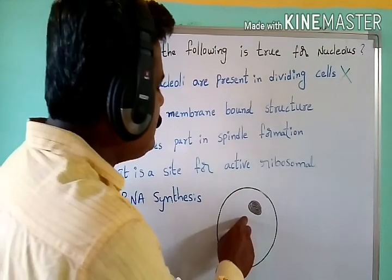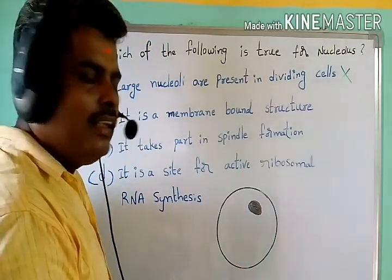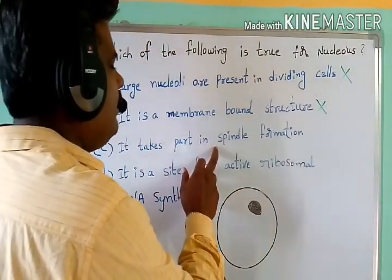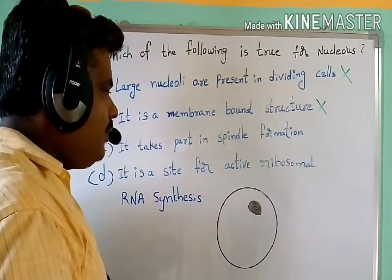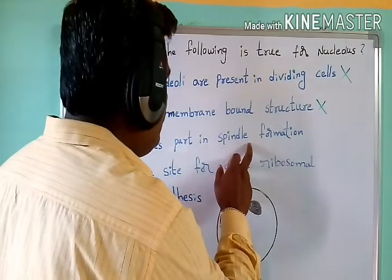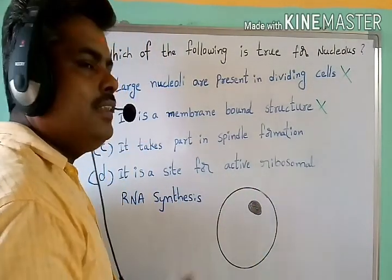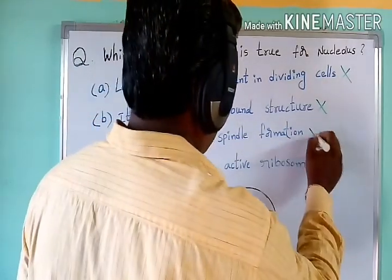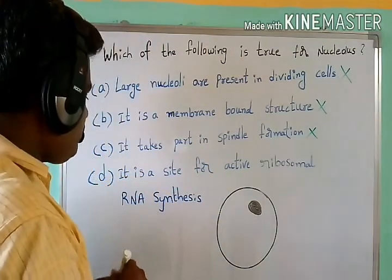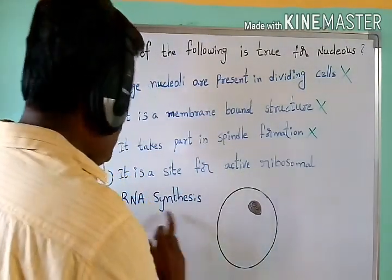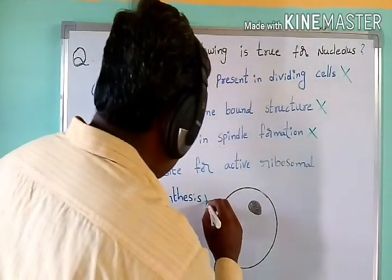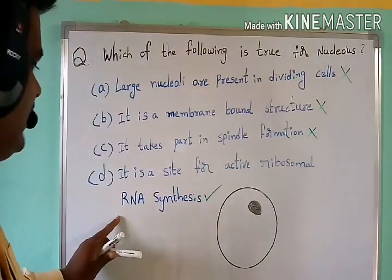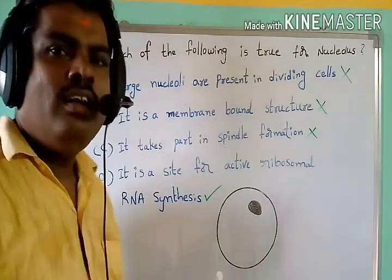Option B: it is a membrane bound structure. This is also wrong — the nucleolus is not covered by any membrane. Option C: it takes part in spindle formation. This is also wrong, because spindle formation involves cytoskeletal proteins. Option D: it is a site for active ribosomal RNA synthesis. This is the correct statement.